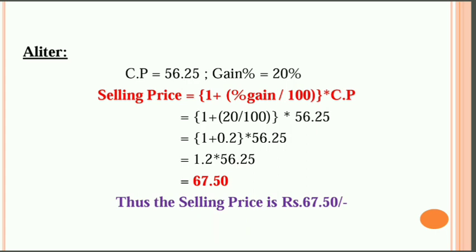Applying this formula: gain percentage is 20%, CP is 56.25. So SP equals 1 plus 0.2 into 56.25. This gives us the selling price of 67.50. You can solve this formula method in a few seconds — it is quicker than the step-by-step approach.